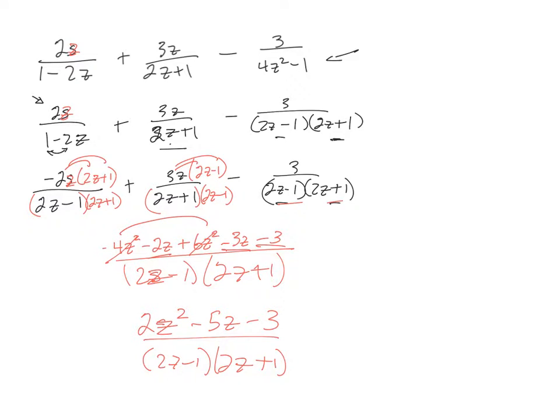You know, I wonder if you could actually factor that top thing. Just looking at it. I'm going to try. So 2z and a z. And then I think I need to put a minus 3 here and a plus 1 there. Let me just see if that works. 2z squared minus 6z plus a z. That would be a minus 5z minus 3. Yeah, that's right.